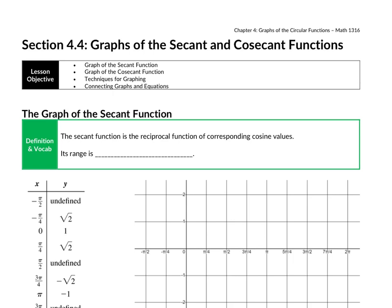Section 4.4 deals with the graphs of the last two circular functions, secant and cosecant. We'll first discuss the graph of secant. Secant is the reciprocal of cosine, so its graph is the reciprocal of the cosine graph, meaning they are intimately related. We're going to have to graph some cosine functions to be able to graph a secant function.